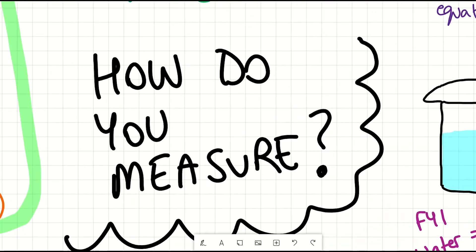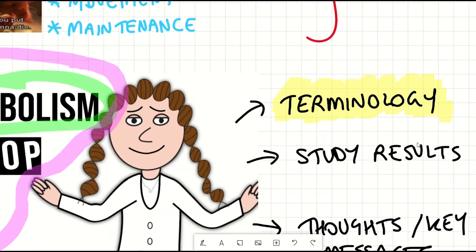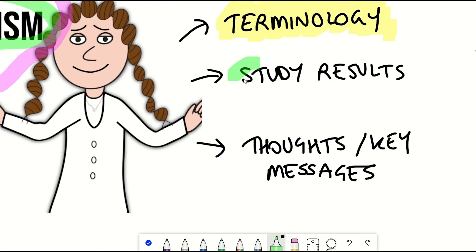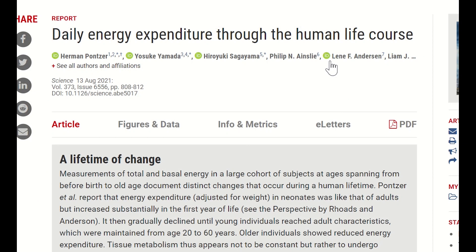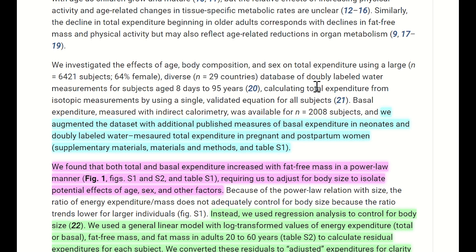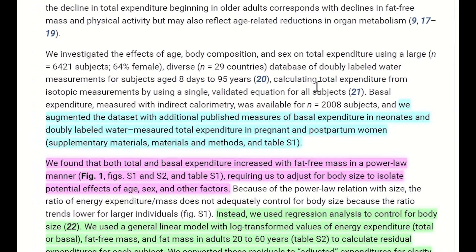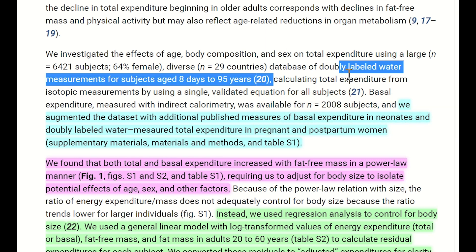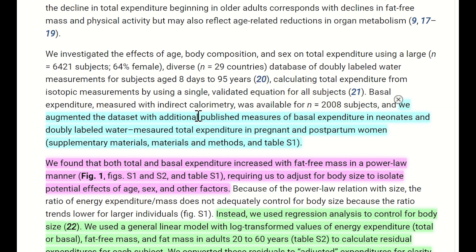So we now know how to measure energy expenditure in individuals. So who did they measure and what did they find out? Well, they wanted to understand how age, body composition and sex actually altered energy expenditure. So they had a large cohort of 6,421 subjects, 64% female and 36% males across 29 different countries, aged between eight days and 95 years old. And then they augmented this data set with additional published measurements of basal expenditure in newborns and the total expenditure in pregnant and postpartum women.